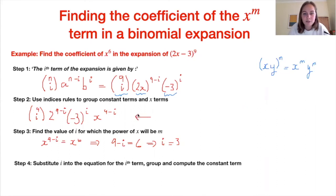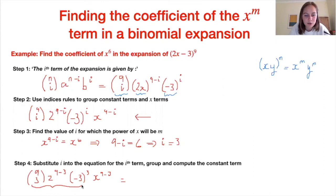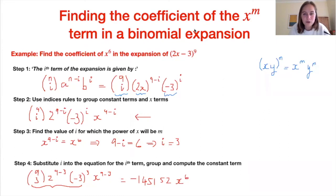Substituting i equals 3 back into our expression for the ith term, we get: 9 choose 3, times 2 to the power of (9 minus 3), times (minus 3) to the power of 3, times x to the power of (9 minus 3). Since this is a paper 2 question, you can use your calculator. Working out those coefficient terms gives us minus 145152 times x to the power of 6. So the coefficient of the x to the 6th term is minus 145152.